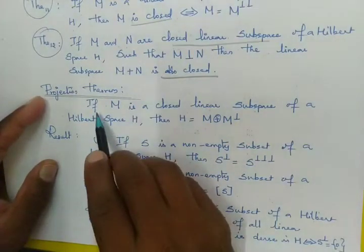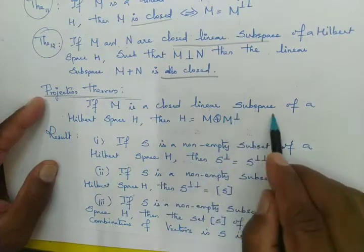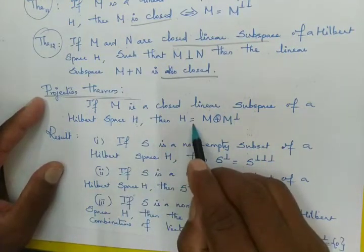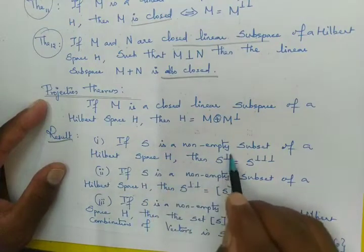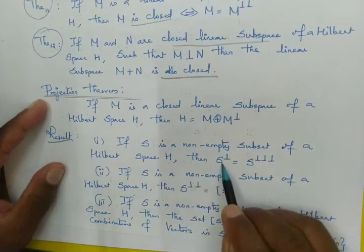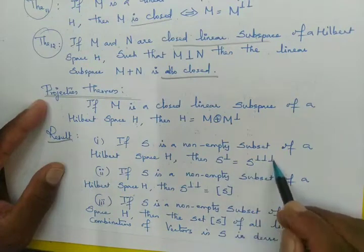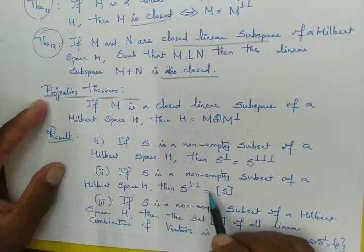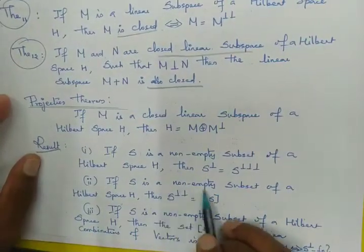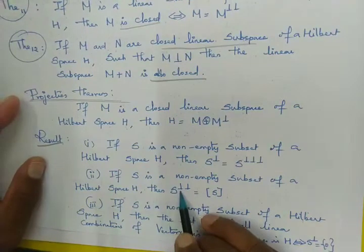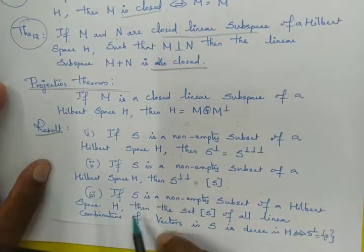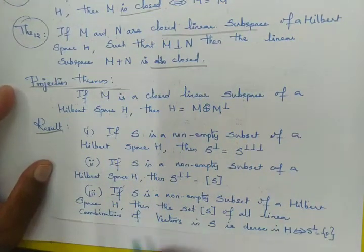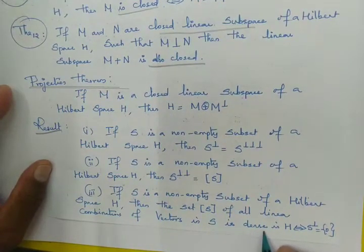Projection theorem: If M is a closed linear subspace of Hilbert space H, then H = M ⊕ M⊥. Some results: If S is a non-empty subset of Hilbert space H, then (S⊥)⊥ = S⊥⊥. If S is a non-empty subset of Hilbert space H, then S⊥⊥ equals the closure of S. If S is a non-empty subset of Hilbert space H, then the set of all linear combinations of vectors in S is dense in H.